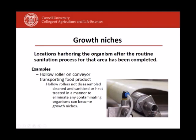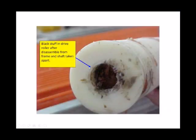Another example of a growth niche is a hollow roller on a conveyor belt. Listeria and water can enter through a crack in the roller. Sanitizer does not get inside, but when the roller operates for eight hours, Listeria inside will come back out and contaminate the conveyor belt. Looking inside such a roller, you can see dirt — the roller has not been taken apart, and even if some sanitizer enters, the dirt will protect the Listeria. Every processing facility will have tens if not hundreds of places where Listeria monocytogenes could survive sanitation. We must continuously find them, fix them, and improve sanitation procedures.